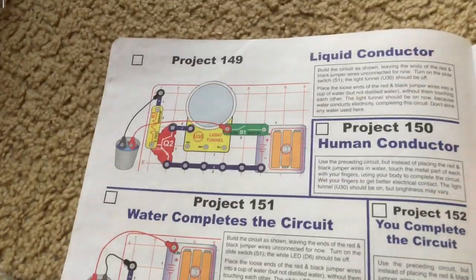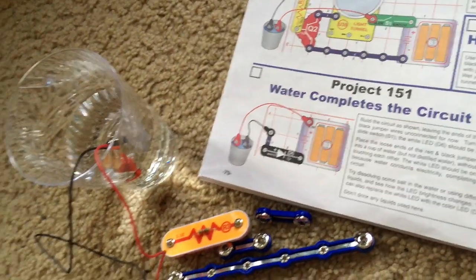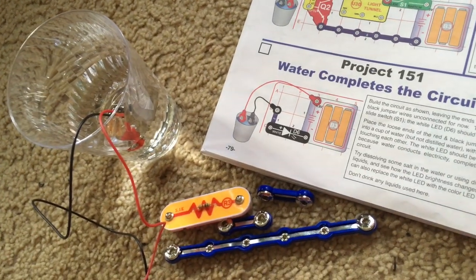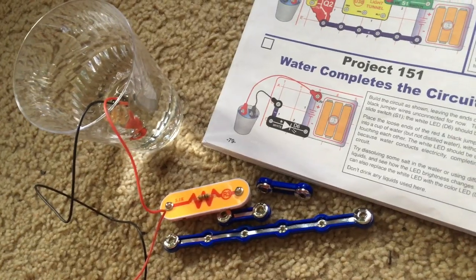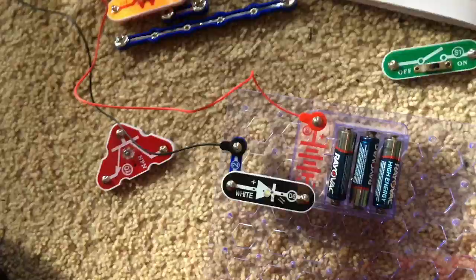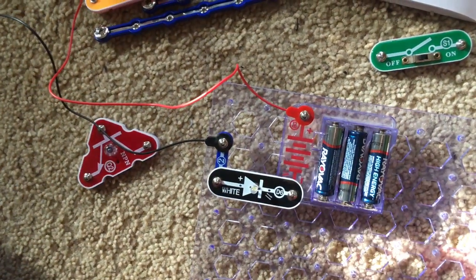Like project 149, the water in this case completes the electric circuit when the ends of the jumper wires are in it, and if you remove either one, the white LED will go out.